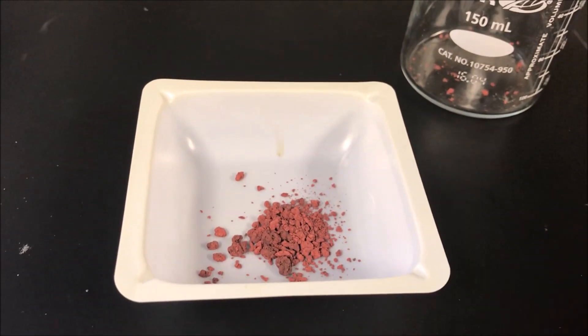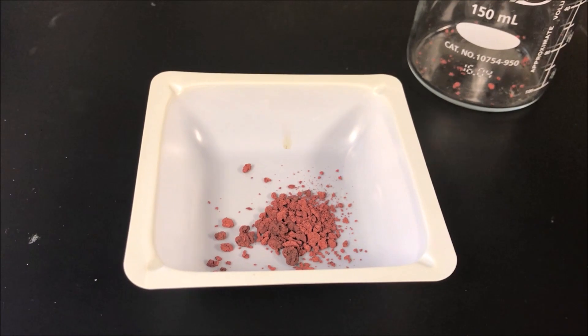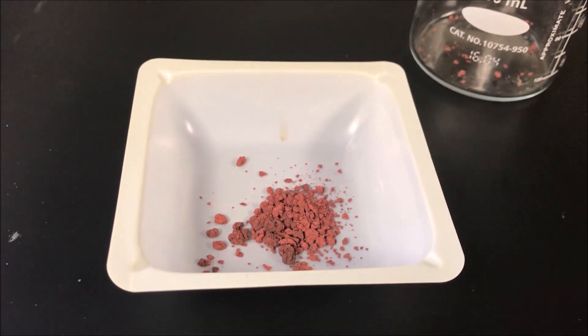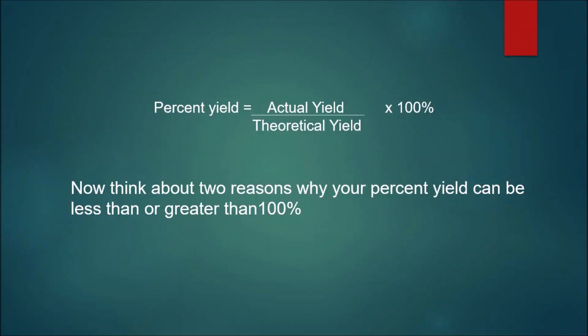Now you have all the required data to calculate the limiting reactant, actual yield, and percent yield. When you perform the actual experiment, your percent yield can be greater than or less than 100%. Now think about two reasons why your percent yield can be less than or greater than 100%.